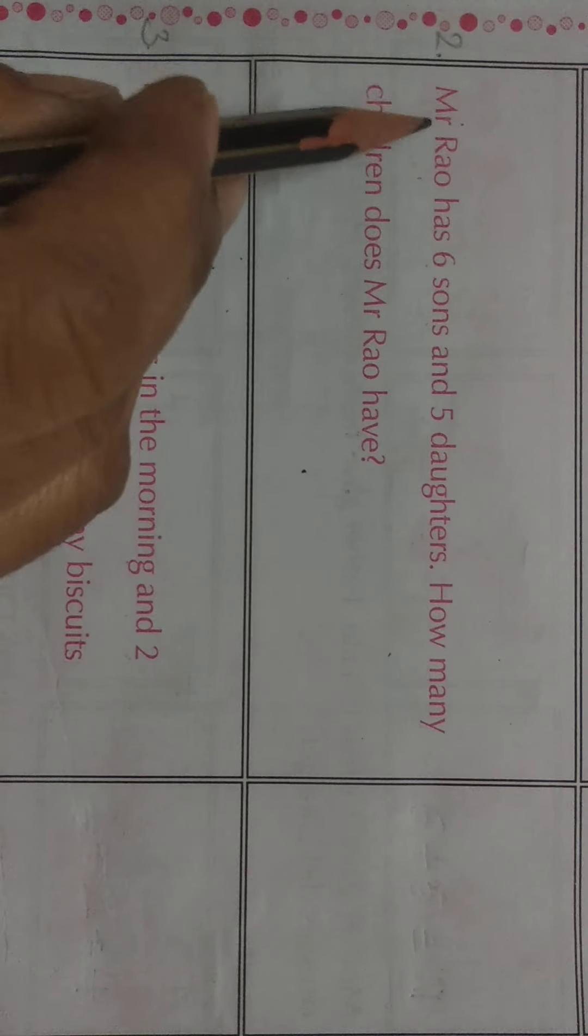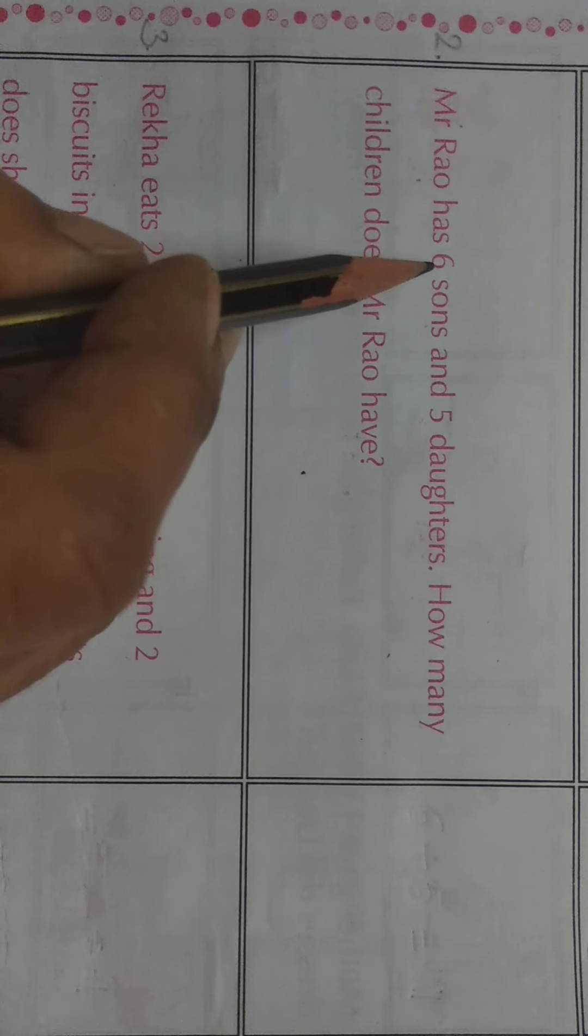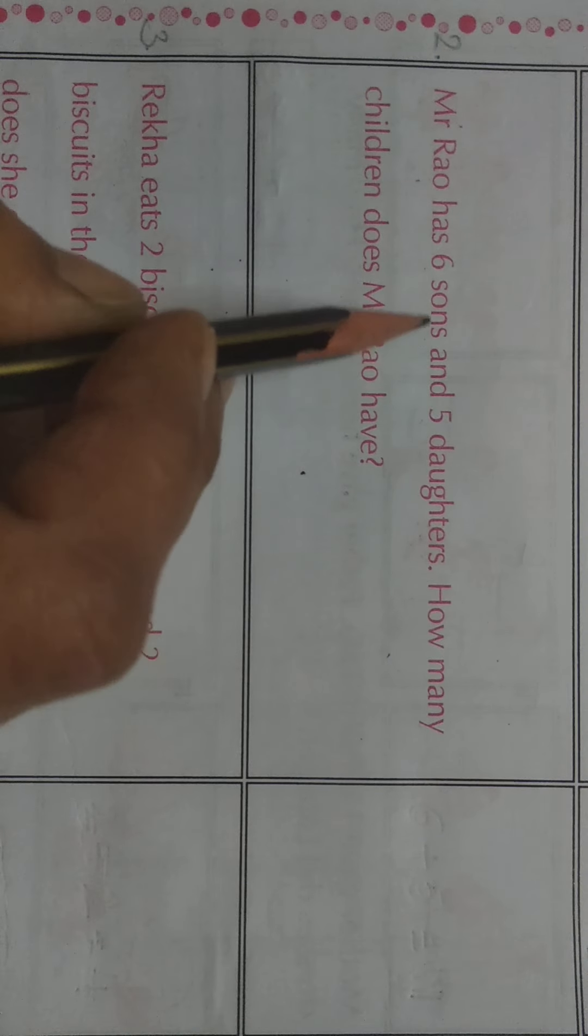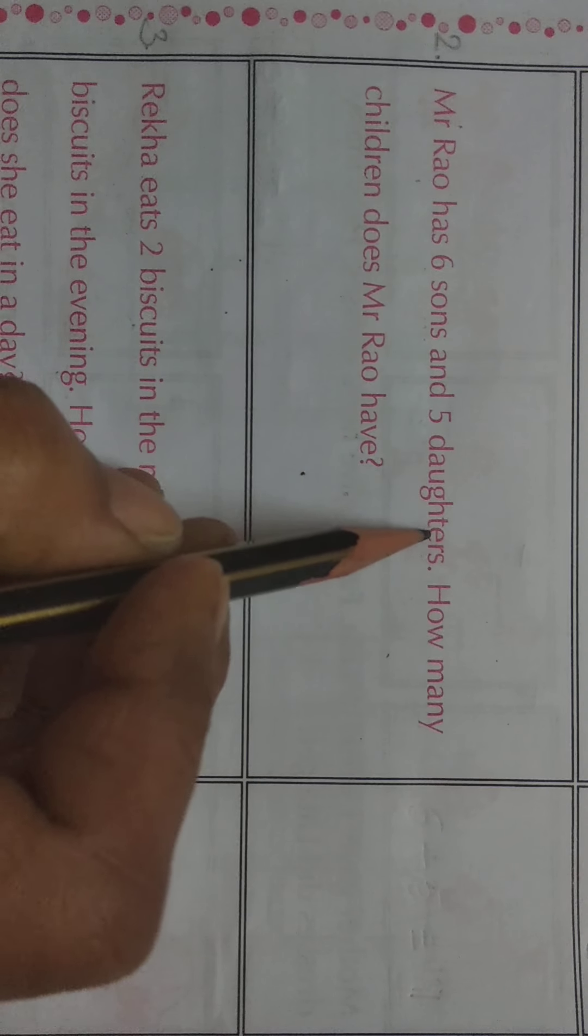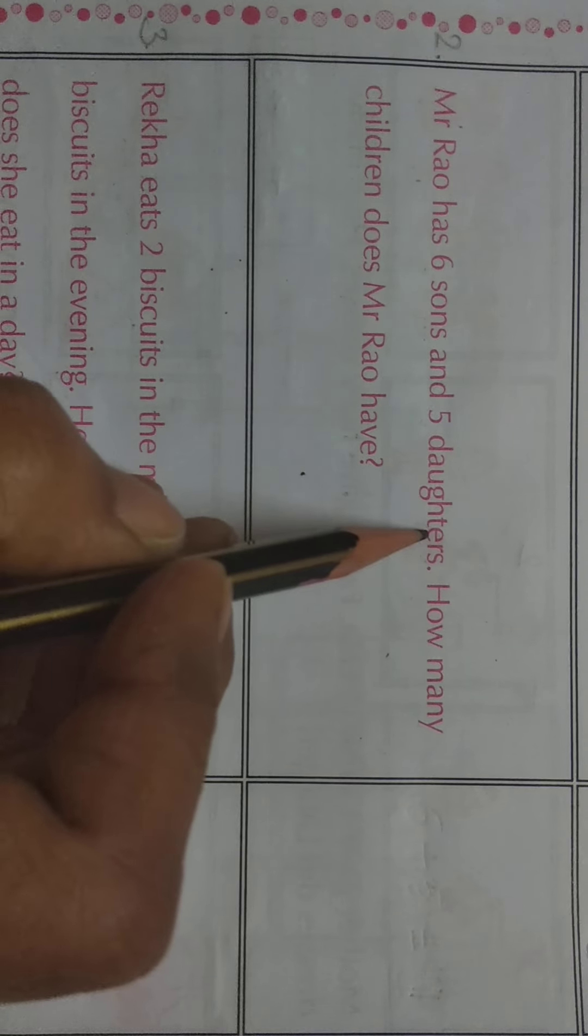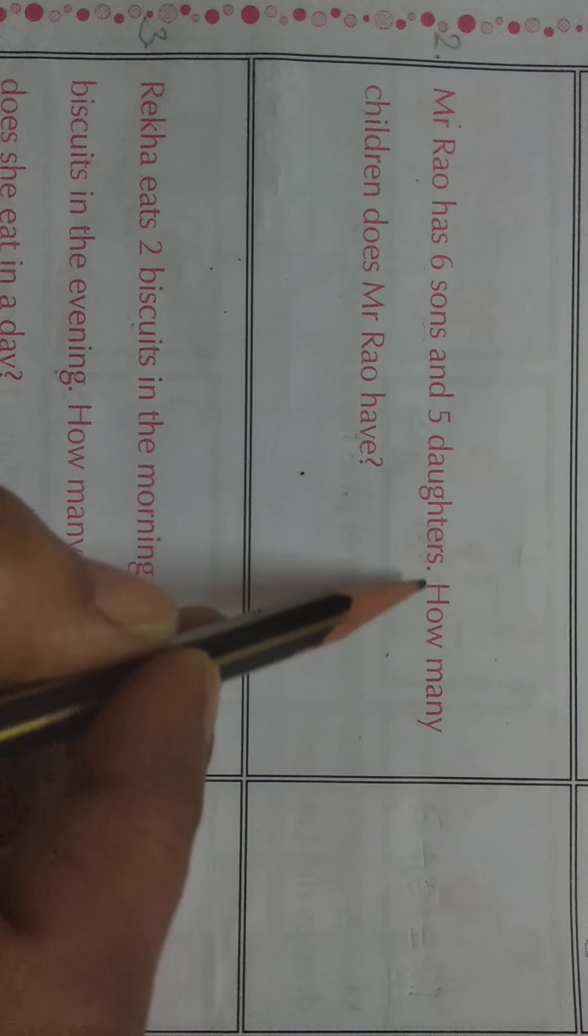Second one. Mr. Rao has 6 sons and 5 daughters. Sons means beta and daughters means betiya. Mr. Rao ke paas 6 beta hain and 5 betiya hain. How many children does Mr. Rao have?